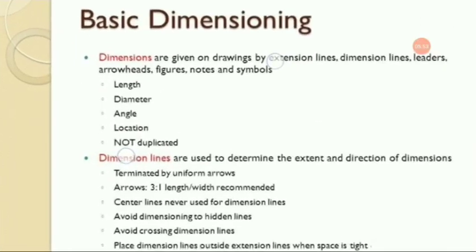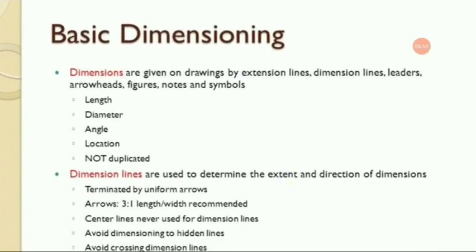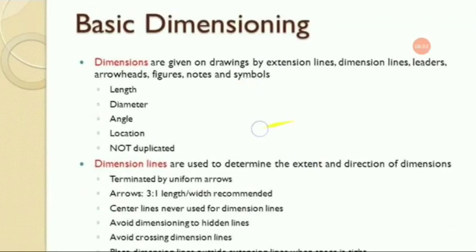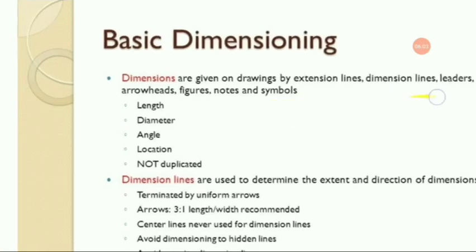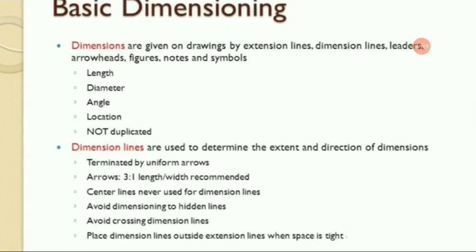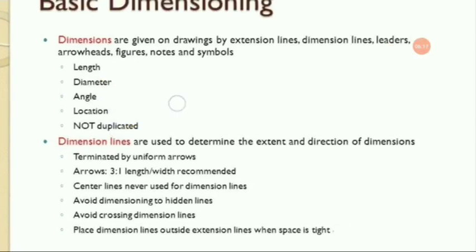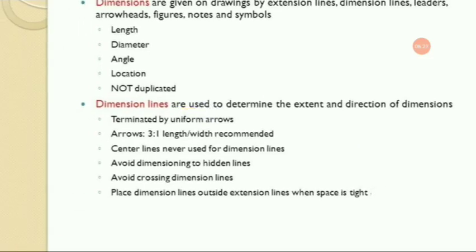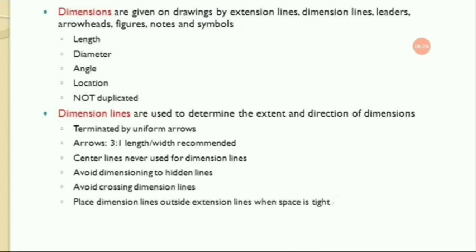In the basic dimensioning system, dimensions are given on a drawing by extension lines, dimension lines, leaders, arrowheads, figures, notes, and symbols. These cover length, diameter, angle, location, and should not be duplicated. Dimension lines are used for indicating the extent and direction of dimensions.